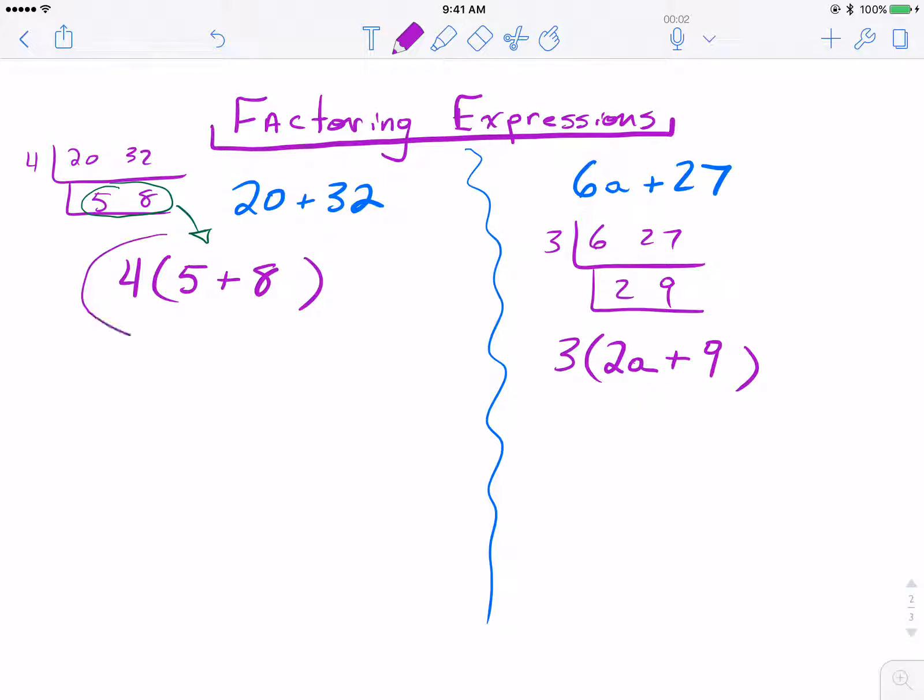So you see in either case, left or right, there's nothing else we could do in the parentheses. 2 and 9 and 5 and 8 on the left were both relatively prime, so we did correctly factor it as much as we could. And it's an equivalent expression. That's also important here.